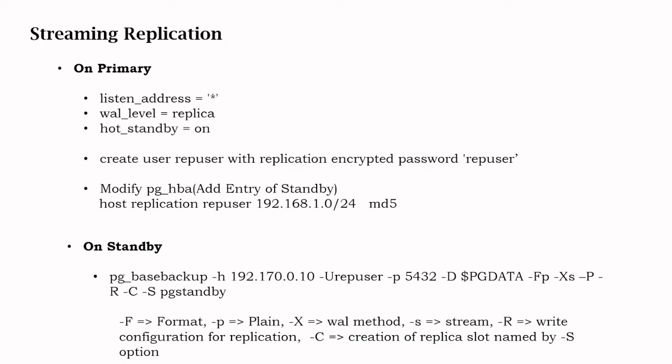On the primary we have to create the replication user — the username and password can be anything, but we have to create the user with the replication parameter. We also have to modify the pg_hba.conf file and add the entry for the standby server. In my case the IP is 192.168.1.x.